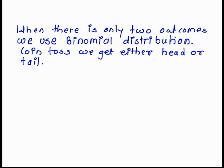Whenever there is only two outcomes, we use a binomial distribution. For example, if we toss a coin, we get either head or tail. So these are only the two outcomes. In such a case, we use a binomial distribution.